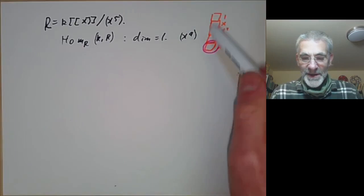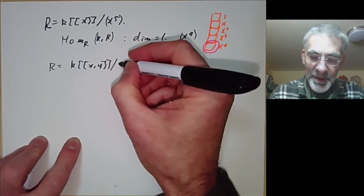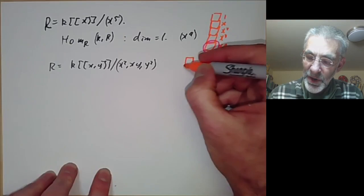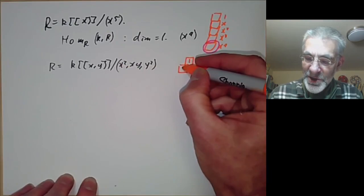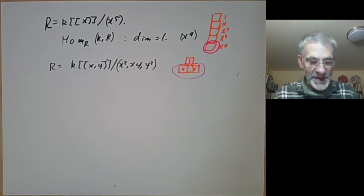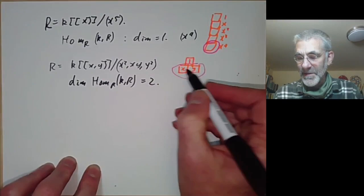The reason this ring is Gorenstein is that there's only one block on the bottom. Hom from K to R corresponds to the blocks on the bottom of the tower. Now let's look at R equals K[[x,y]] modulo (x squared, xy, y squared). This ring has length 3, giving three blocks. The tower is generated by 1 at the top, with x and y generating the next level. There are two blocks on the bottom, which corresponds to the fact that Hom over R from K to R has dimension 2, spanned by x and y. So this ring is not Gorenstein.